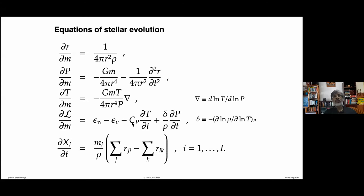If the star is not in mechanical equilibrium, a shell can expand or contract, and if there is expansion or contraction there is work done. The thermodynamic change in energy due to this work done can be written as T dS, which can be expanded in terms of the specific heat at constant pressure: C_p ∂T/∂t plus δ/ρ times ∂P/∂t, where δ is given by the logarithmic derivative of density with respect to temperature at constant pressure. This whole term is T dS/dt — the rate at which the total internal energy is changing because of mechanical changes in the stellar structure.